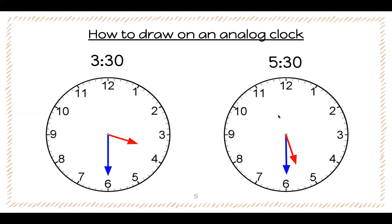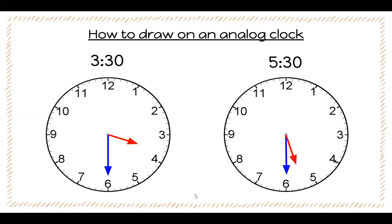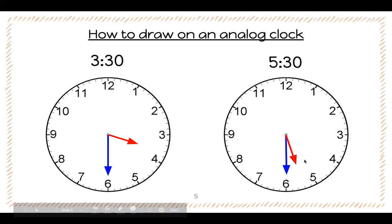Now let's look over here — it says 5:30, so we need to draw 5:30. Remember, if we're doing 30 the minute hand is going to be on the 6, it's going to be half an hour. We can double check by counting 5, 10, 15, 20, 25, 30. Alright, that looks correct. Now let's check the hour. If it was exactly on 5 it would be right on 5, but because 30 minutes have passed it's going to be right in the middle between the 5 and the 6.